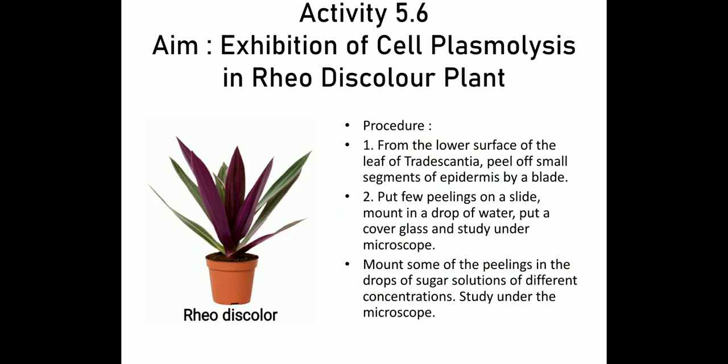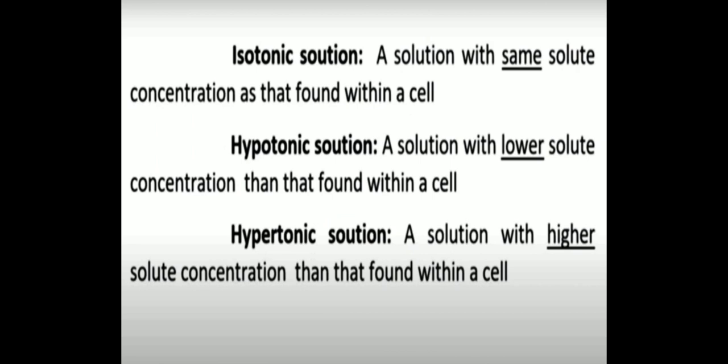For this, there is Activity 5.6, which is the exhibition of plasmolysis in the Rhoeo discolor plant. You must have seen this type of plant at your home or near your home. Here we will take the lower surface of the leaf, peel it off, and observe it under the microscope. You will see the same structure as in the onion peel experiment. We will first keep only water there, and then we will add some sugar solution, and then we will see a difference.